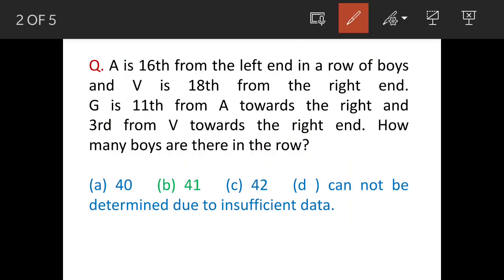The question is about the number of boys sitting in a row. There's a boy A, he's 16th from the left end. There's another boy V, who is 18th from the right end. A third boy G is 11th from A towards the right and 3rd from V towards the right. How many boys are there in the row?